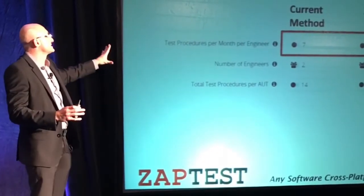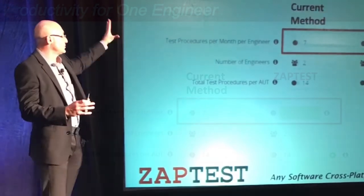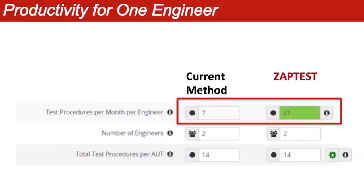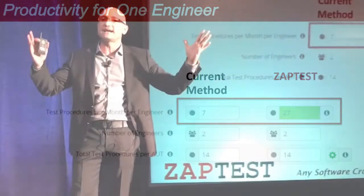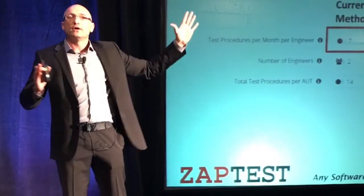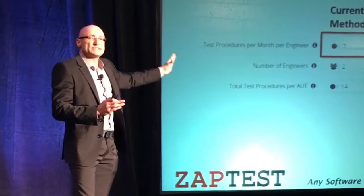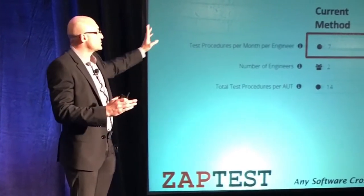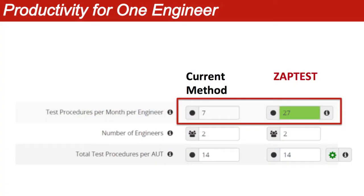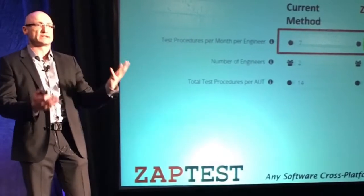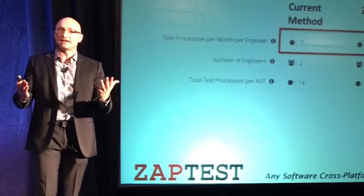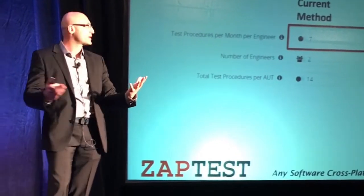This leads us to the numbers. Using the current method, it's going to take you — within 160 business hours in a month — about 7 procedures per month to automate with one engineer. Versus with ZepTest, you can automate 27. That's with one engineer per month. The productivity difference is already significant.